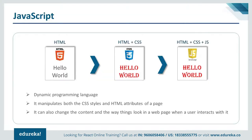JavaScript is basically a programming language which is predominantly used for client-side implementation. It initially started as a tool for client-side validation, but as time has progressed it has moved into a full-fledged language that can be used for both client-side and server-side implementation. HTML is used for defining layouts and CSS handles the styling.